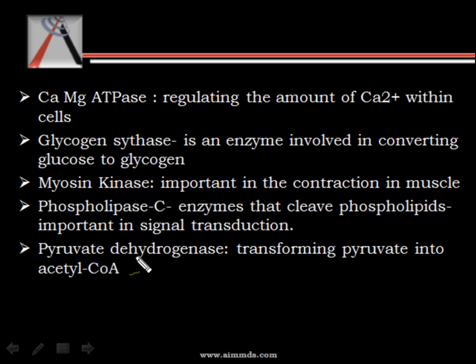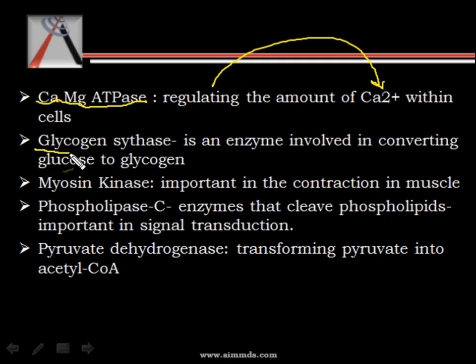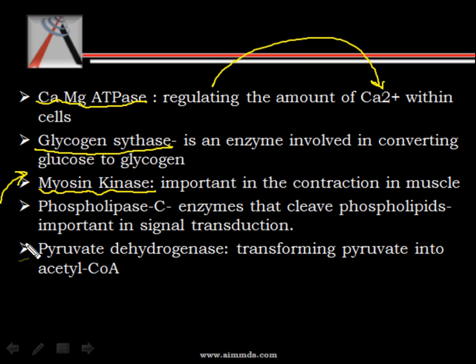Then we have calcium magnesium ATPase, which is a calcium pump that regulates the amount of calcium within the cell. Then we have glycogen synthase — as the name suggests, it is an enzyme involved in converting glucose to glycogen. We also have myosin kinase, which is important in contraction of muscles, and it is this enzyme that brings about the role of calmodulin in smooth muscle contraction.